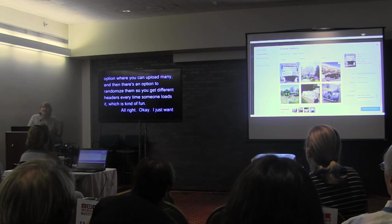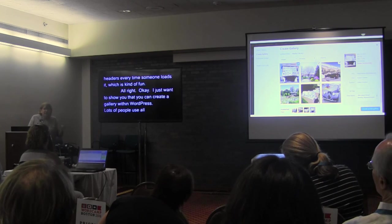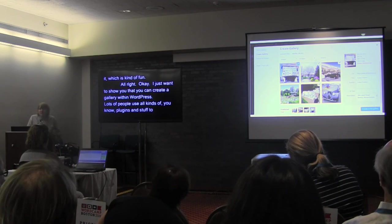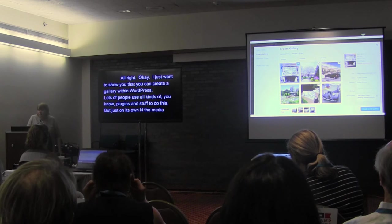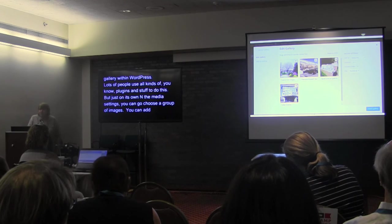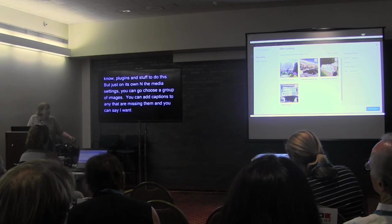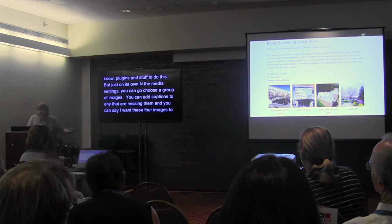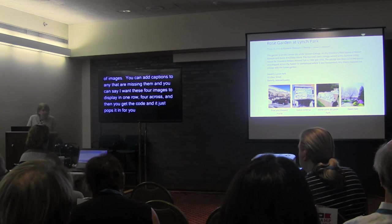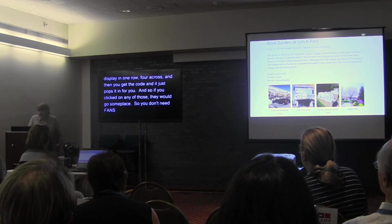You can create a gallery within WordPress. Lots of people use plugins for this, but on its own in the media settings, you can choose a group of images, add captions to any that are missing them, and say you want these four images to display in one row, four across. Then it just pops the code in for you, and clicking any of the images goes somewhere. You don't need fancy plugins to do a simple gallery.